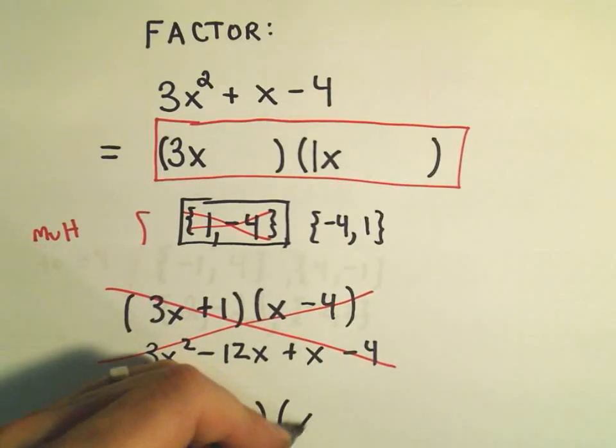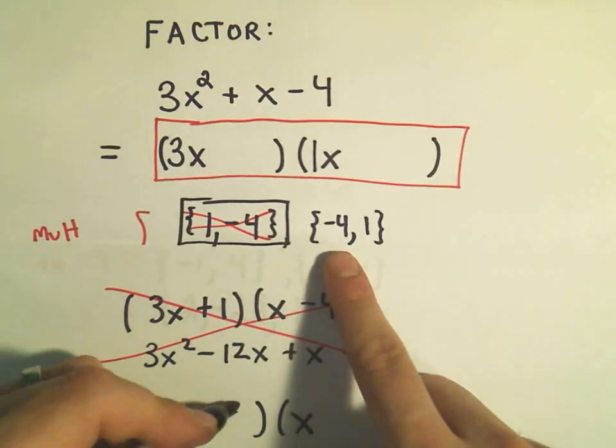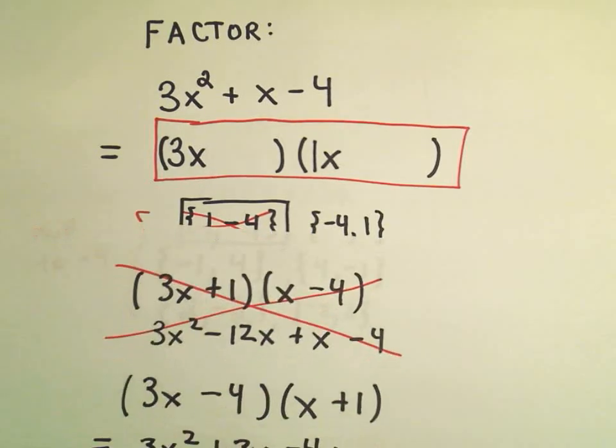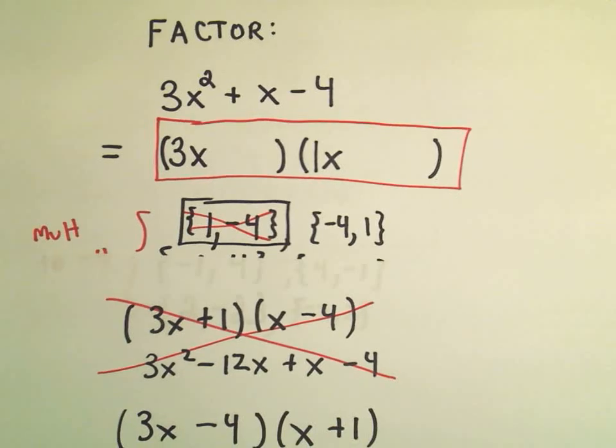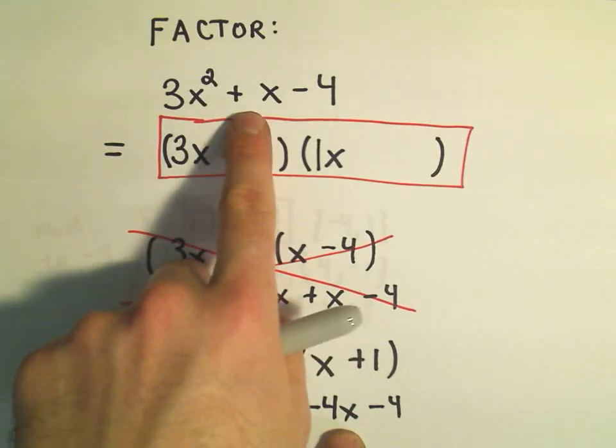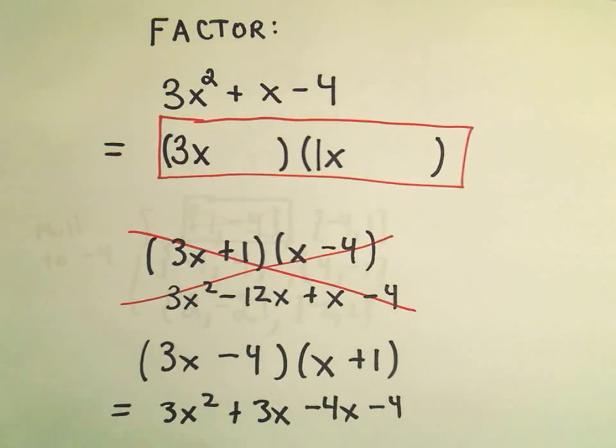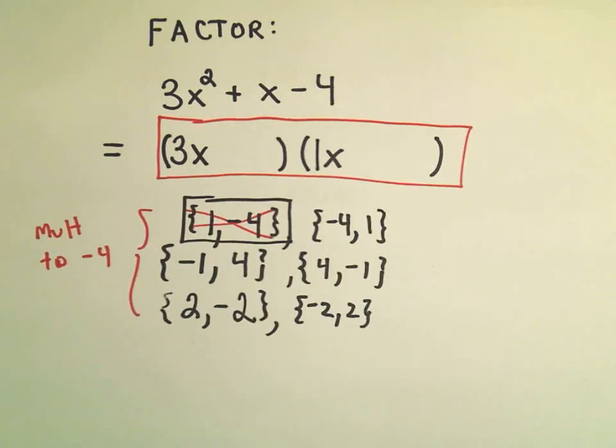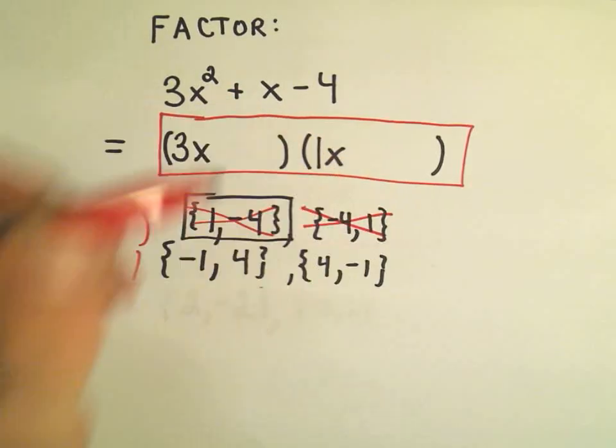Then I go to the next one. So, we have 3x and x. And maybe I'll try minus 4 and plus 1. So, if I distribute these out, I'll get a 3x squared. I'll get a positive 3x. On the inside, I'll get a negative 4x. And then it looks like I get a negative 4. If you combine the middle terms, 3x minus 4x is negative x. But we want a positive x. So, close but no cigar. So that means that that one doesn't work. That particular combination does not work.